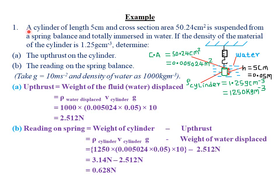Our first example reads that a cylinder of length 5 cm and cross-sectional area 50.24 cm² is suspended from a spring balance and totally immersed in water. If the density of the material of the cylinder is 1.25 g per cubic centimeter, determine part A: the upthrust on that particular cylinder. So the first thing, we simply sketch the diagram so that we are able to really depict or see what is actually happening.